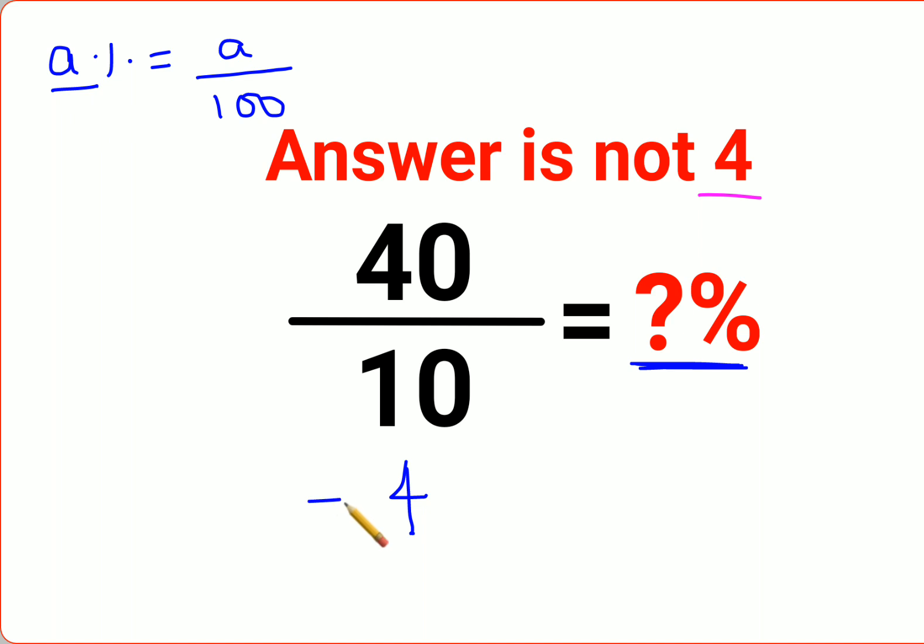So now if you already have a number and you want to convert it into a percent, in that case what you should do - here see from percent to number it was division. So from number to percent it should be multiplication, correct? Now you need to multiply with what? See you divided by 100. So you will multiply by 100.